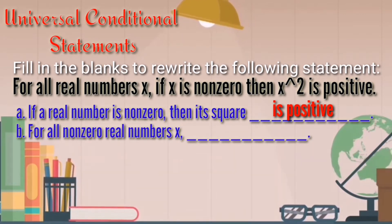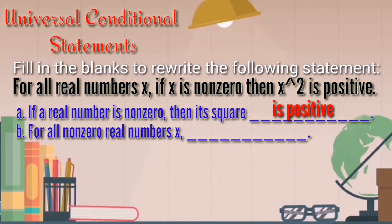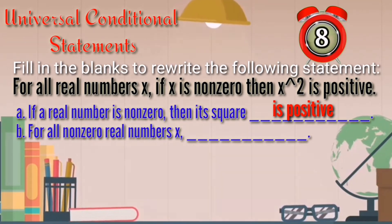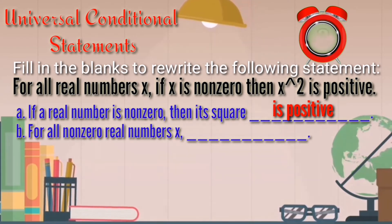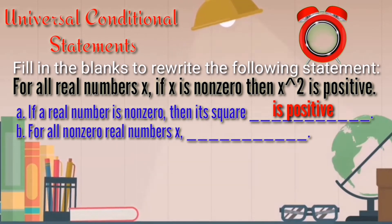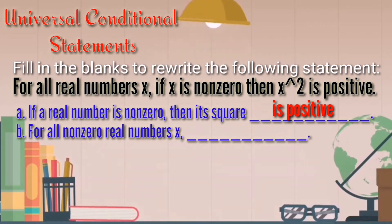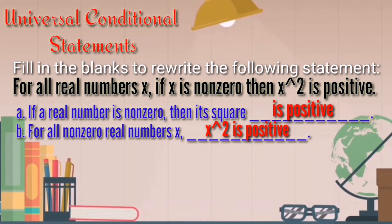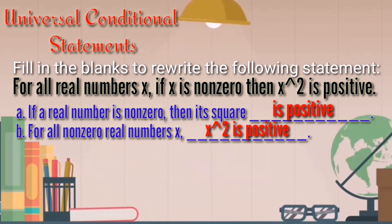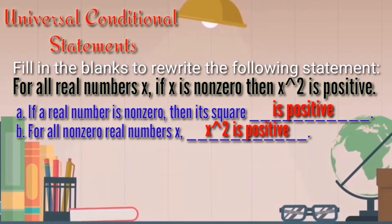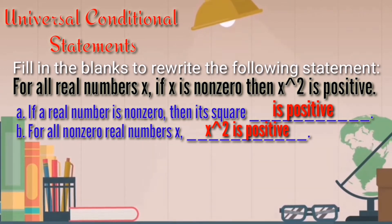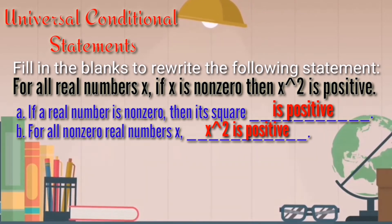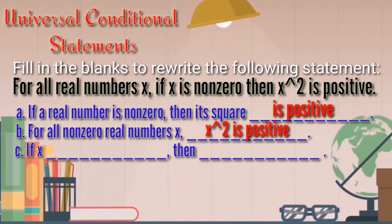Letter B: 'For all non-zero real numbers x, blank.' The answer is: 'For all non-zero real numbers x, x squared is positive.' If we identify the two statements as universal or conditional, we can say the first statement is conditional because of the words 'if' and 'then,' and the second is universal because of the words 'for all.'